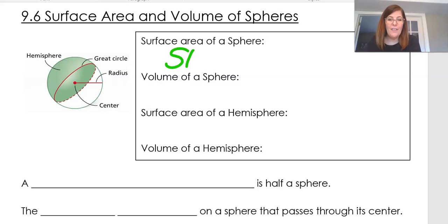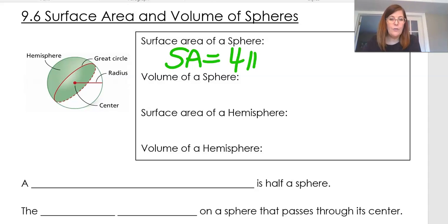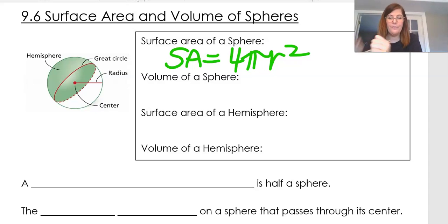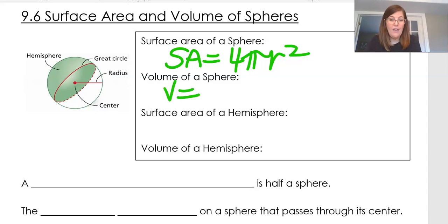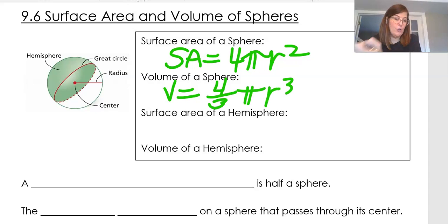When I want to find the surface area — the outside covering of a sphere — the formula is 4 pi r squared. If I want to find the volume of a sphere, it is 4/3 pi r cubed.